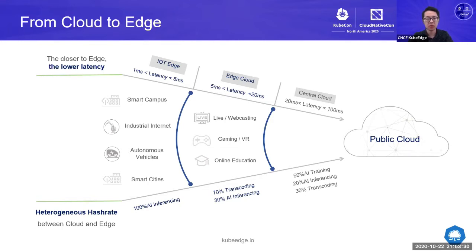While on the IoT edge, it's actually very close to the data source and the end user, so it's almost exclusively running AI inferencing workloads. Basically, from the cloud to the edge, the closer to the edge, the lower the latency. The underlying hardware are very different — in the central cloud we have very standard physical servers, but on the edge they are very different, like CAN servers and IoT gateways.